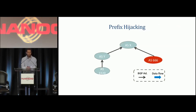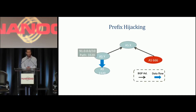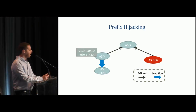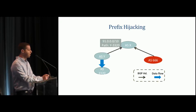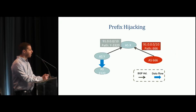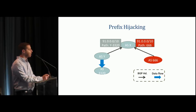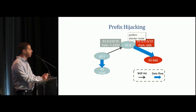Let me quickly remind you what prefix hijacks are. Assume we have one legitimate origin for a prefix, AS3320, which announces its prefix 91.0.10 to ASY. ASY learns a route and forwards the advertisement to ASX, appending its own identifier. But the attacker at AS666 announces the same prefix. Now ASX has learned two routes and, using the shortest path rule, traffic flows to AS666 instead of the legitimate owner.